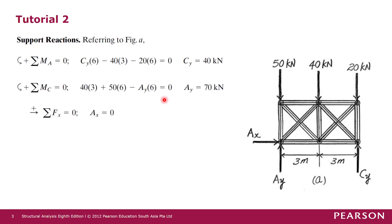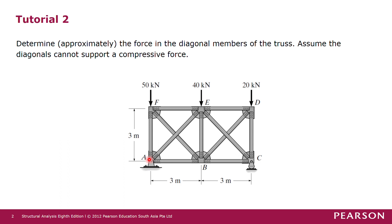First of all, we have to determine the support reactions. We have a pin connection at joint A — a pin support — and then a rocker support at joint C. At joint A, we are going to have two reactions: one in the vertical direction and one in the horizontal direction. At support C, since it is a rocker, there is only one vertical reaction and there is no horizontal reaction.